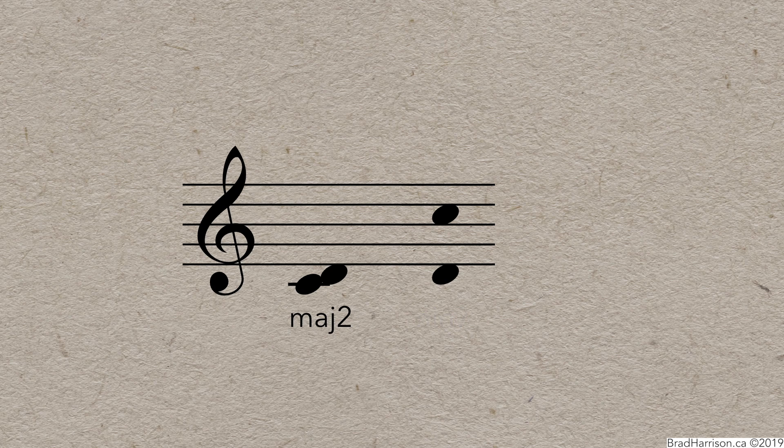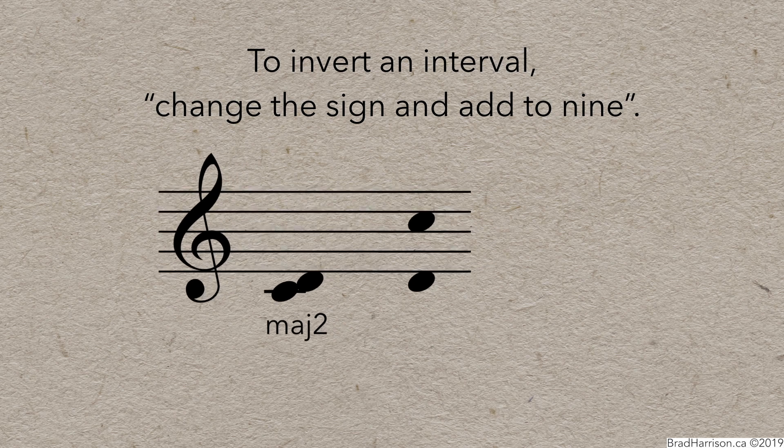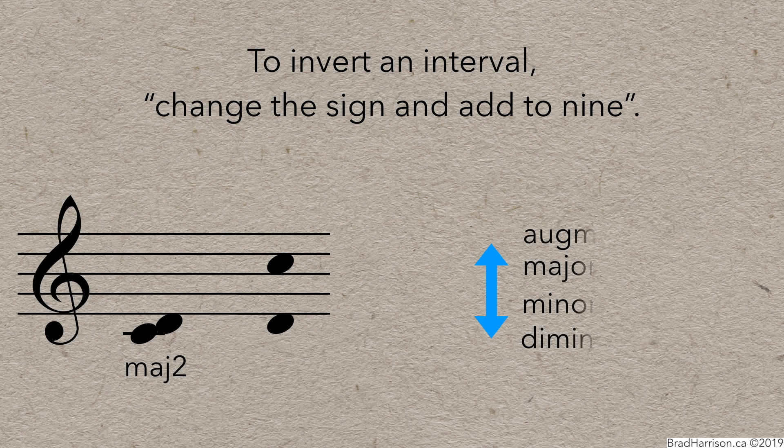But there's a trick. To invert an interval, you can simply change the sign and add to 9. What that means is, if you invert a major interval, you'll always get a minor interval.